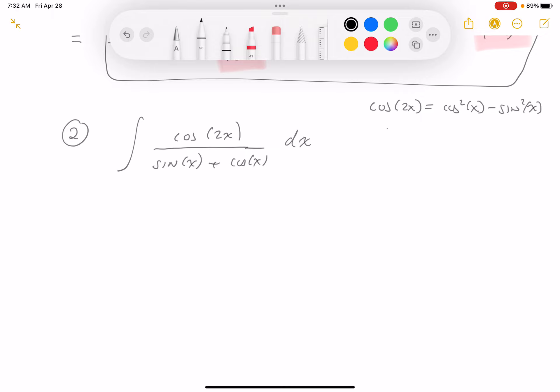What else do I notice about that? I could factor that into cosine x minus sine x times cosine x plus sine x. All right, I think I'm ready to write this down now, and I'm doing a simplification now.